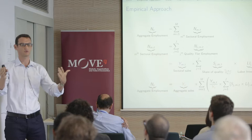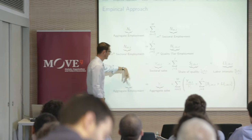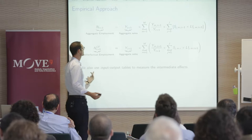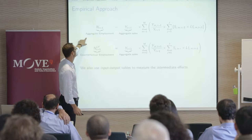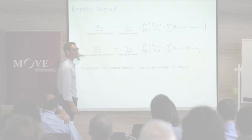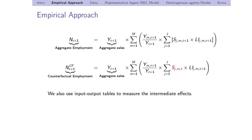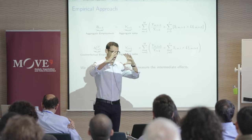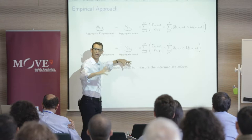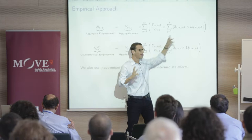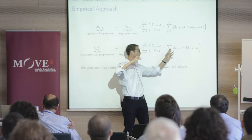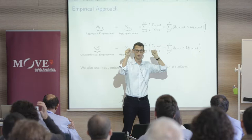So I have a measure of aggregate employment with sectoral shares, quality-within-sector shares, and labor intensity. I can then ask: what would have happened if the composition within the pie — I allow it to shrink as it did — but what if the quality composition had remained the same as in 2007? What if the share of McDonald's versus the nice restaurant had not changed? I'm going to do a counterfactual where the only thing I'm changing is the quality share.